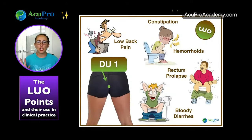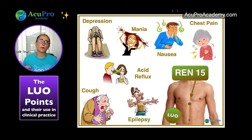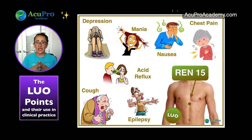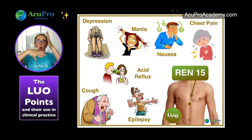REN15 and DU1 are opposite yin-yang meridians. I've done DU1 on many patients — it works really well specifically for hemorrhoids. Using REN15 and DU1 together is great for prevention of epileptic attacks. Because REN and DU are connected to essence, these two points help balance the whole spine, brain, and essence perspective when it comes to epilepsy.